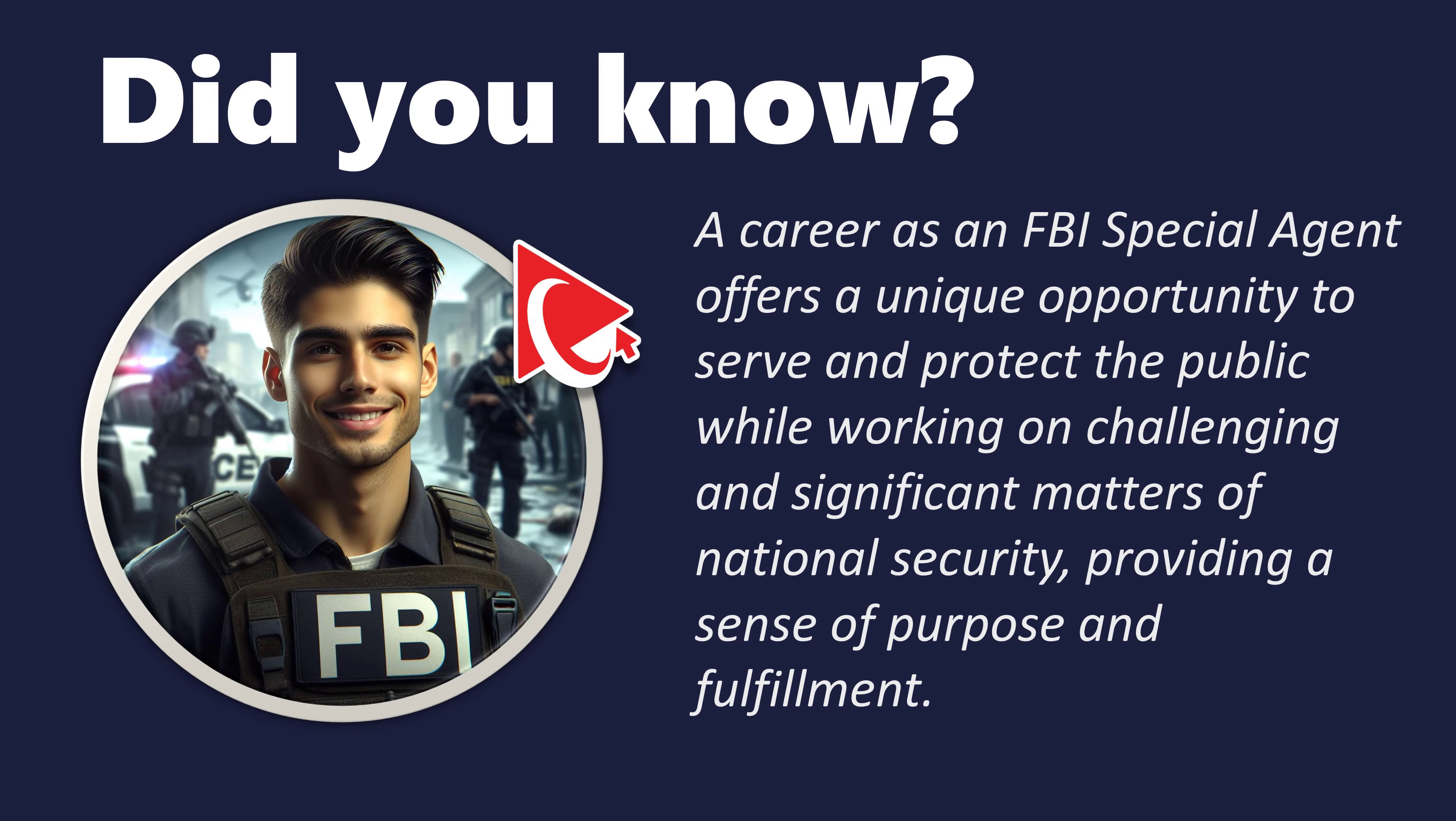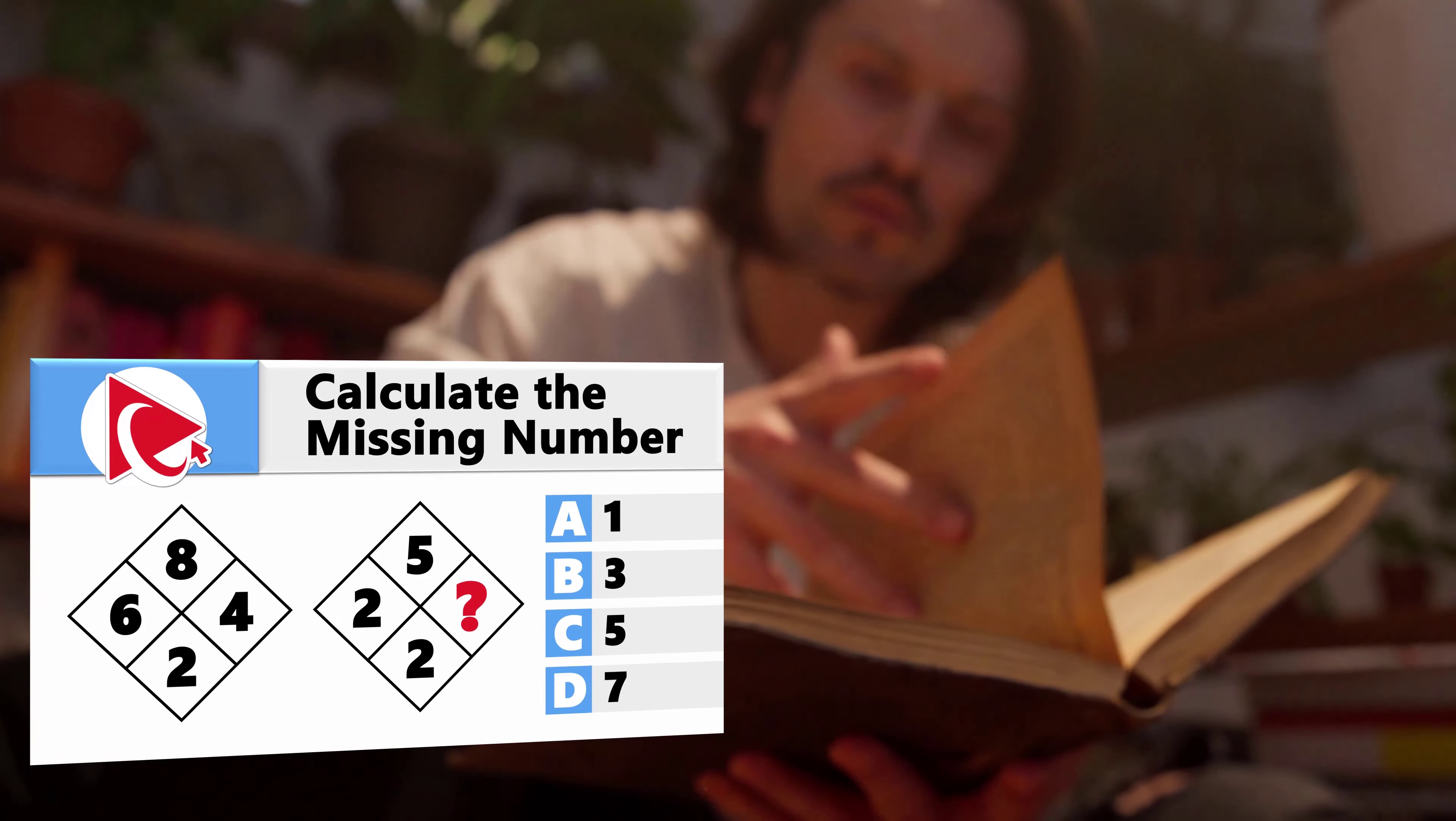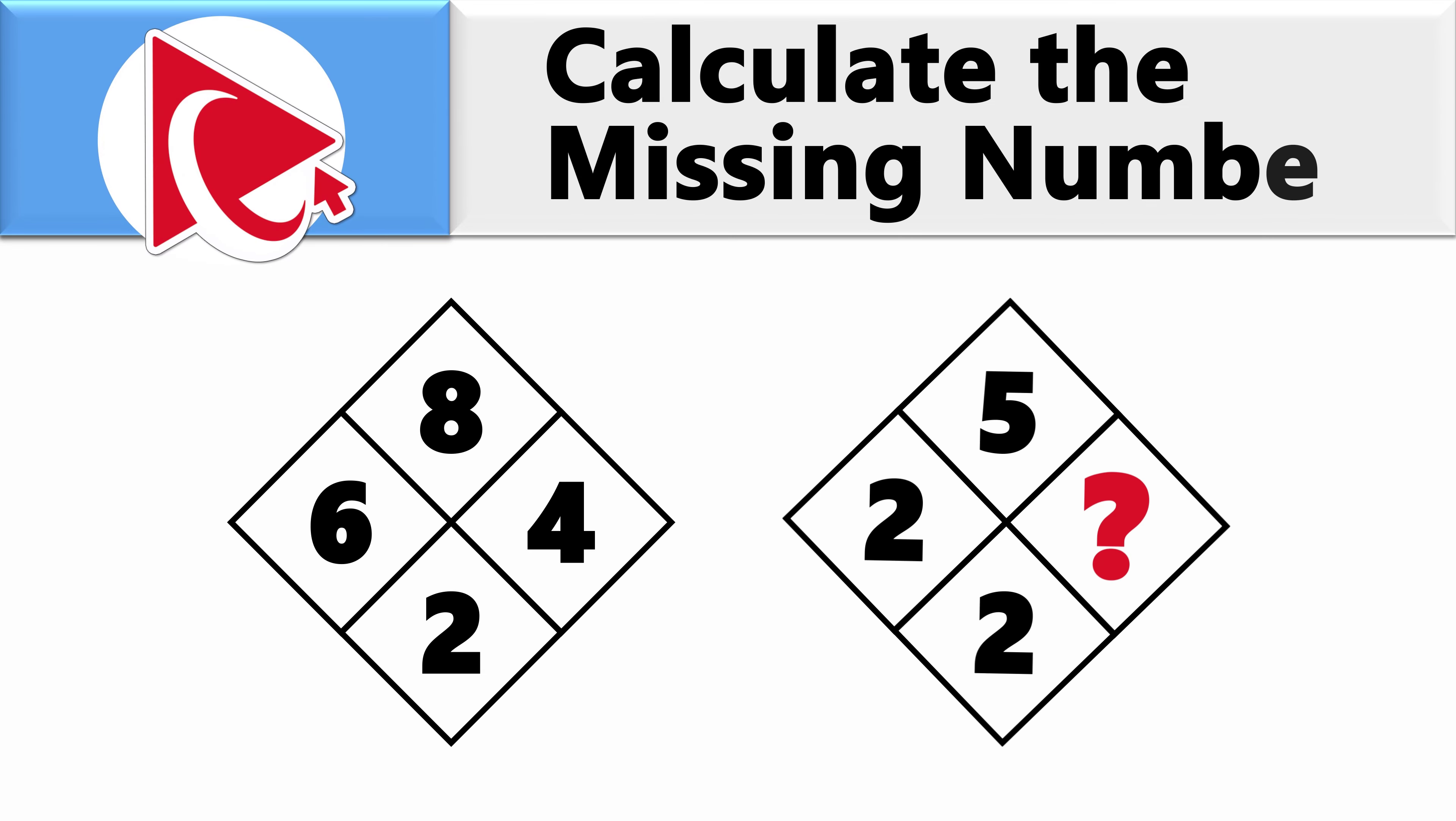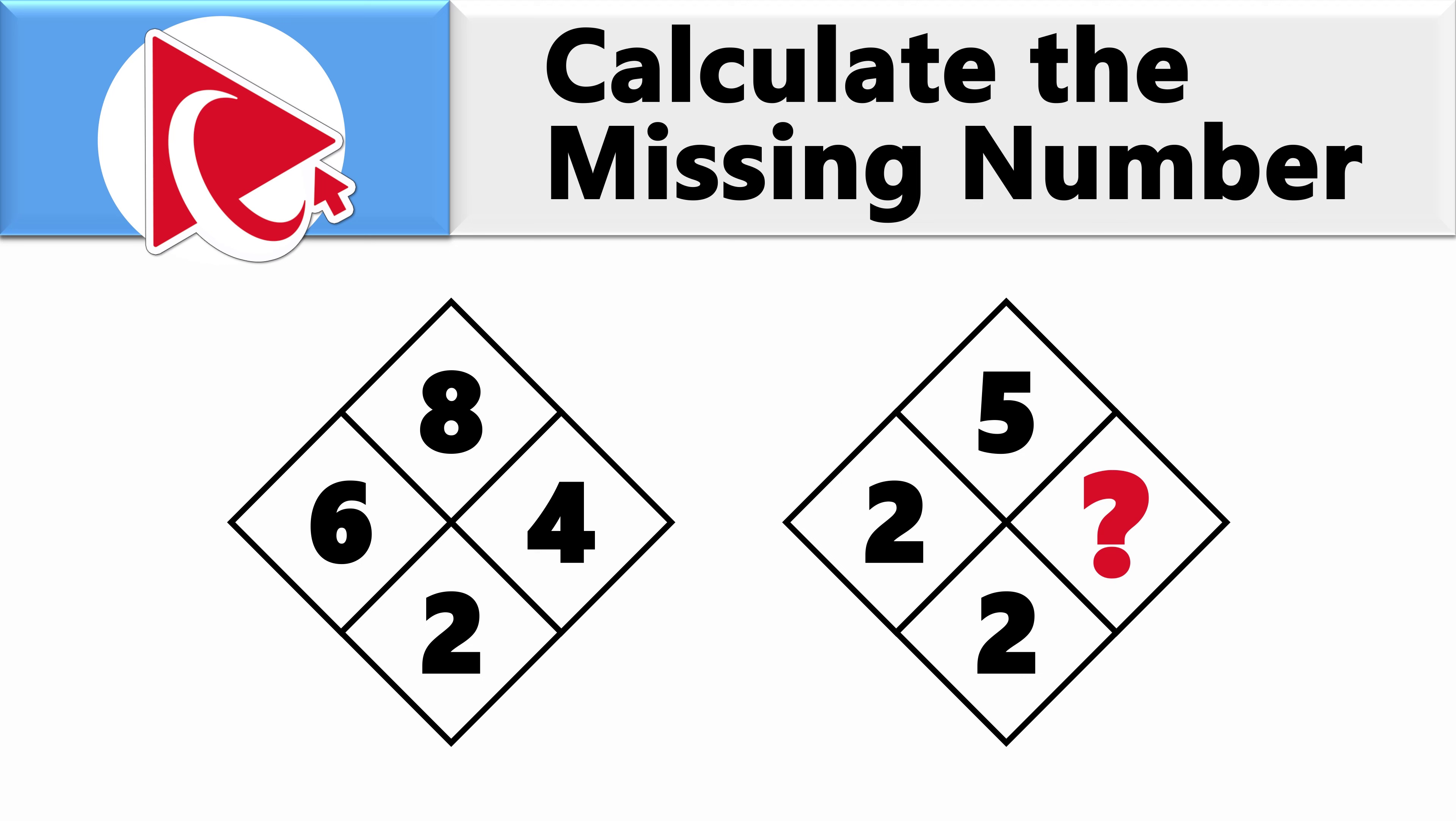And now it's time to grab your thinking goggles. This question is so intricate, Sherlock Holmes would need a cheat sheet. You're presented with two diamonds. Each diamond has four numbers inside. In the first diamond, numbers are 8, 6, 2, and 4.